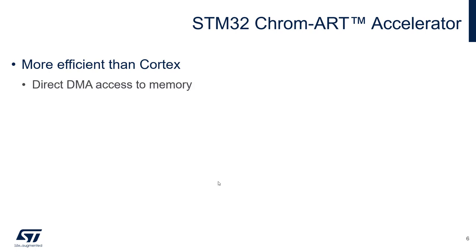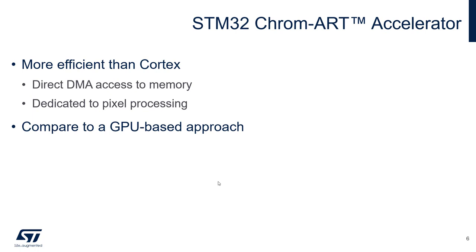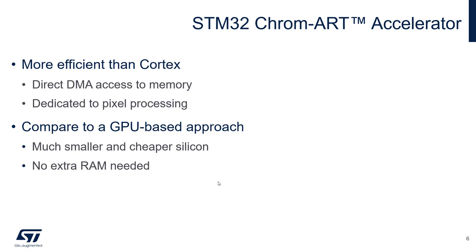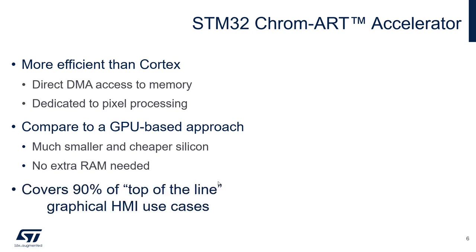That's why ST introduced the ChromArt Accelerator. It is much more efficient than the Cortex, has direct DMA access to memory, and is dedicated to pixel processing. Compared to a GPU-based approach found in most smartphones or heavy systems such as a PC, it is much smaller, gives a much cheaper silicon, and doesn't need extra RAM to process. It covers 90% of top-of-the-line graphical human-machine interface use cases.